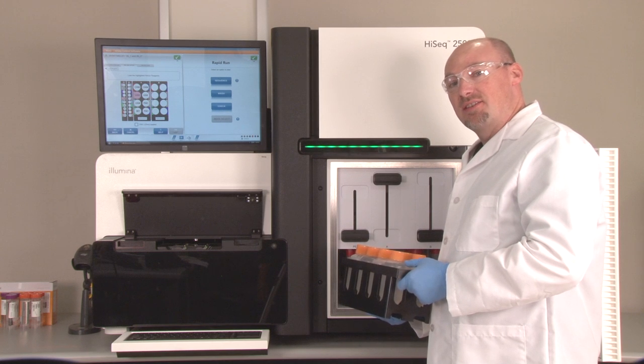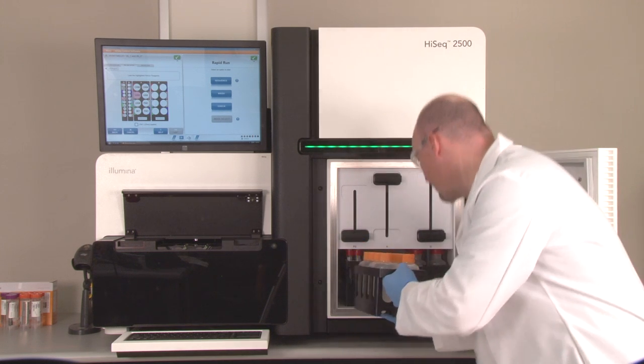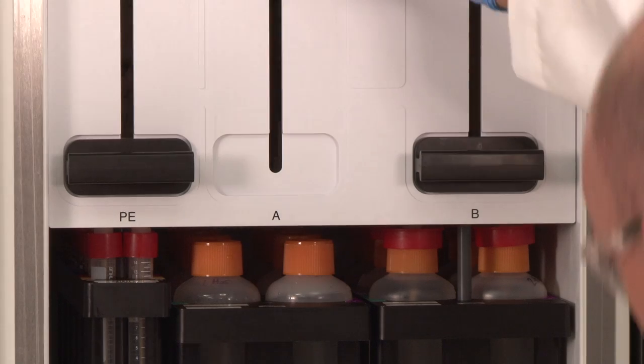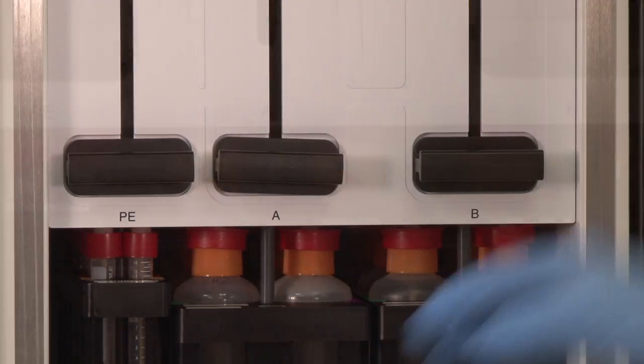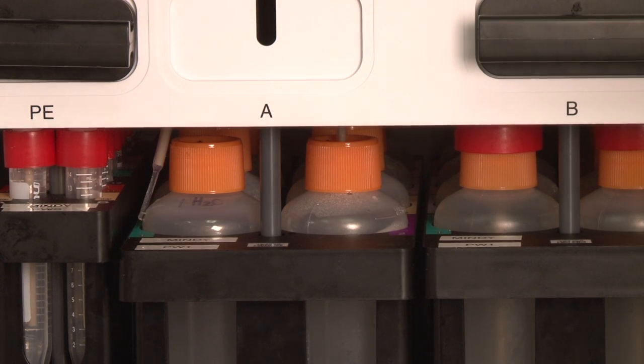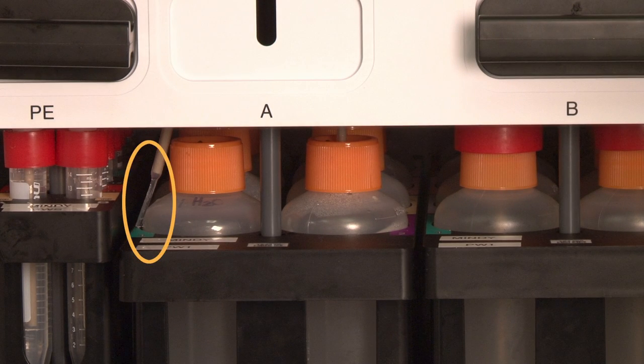When loading reagents into the chiller, make sure to get down to eye level with the reagent rack and monitor the sippers going into the tubes. It is possible for the plastic sipper to get bent and potentially miss the opening of the bottle.